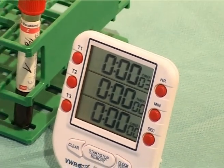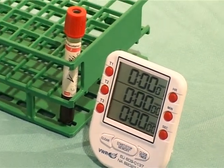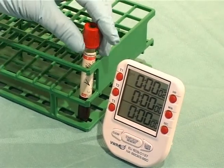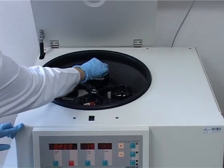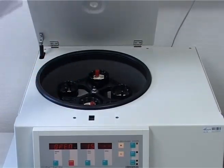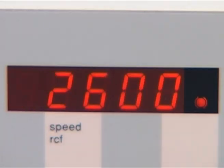After coagulation is finished, the blood sample should be centrifuged for 15 minutes at room temperature and 1300 Gs. Here, it is 2600 rotations.